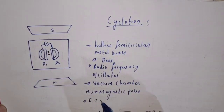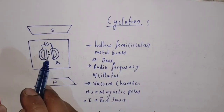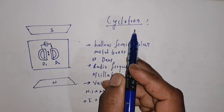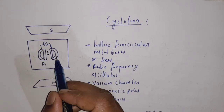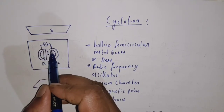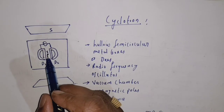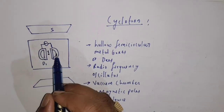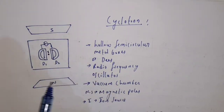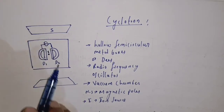I is the ion source which produces ions. To summarize the construction: the cyclotron consists of two hollow semicircular metal boxes called D's, connected to a high frequency oscillator. In between the two D's, an ion source is placed, and the D's are enclosed in the vacuum chamber, which is placed between the magnetic poles.